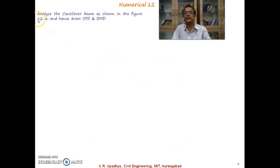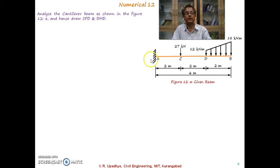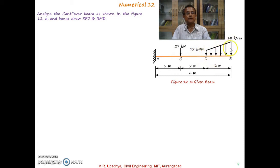In Numerical 12, the problem statement is: analyze the cantilever beam as shown in Figure 12A and draw the SFD and BMD. The beam goes from A to B, where A is the fixed support and B is the free end. At C, which is 2 meters from A, it is subjected to a 27 kN point load. From D up to B it is subjected to a uniformly varying load. We have not previously analyzed a beam subjected to uniformly varying load, and that is what we will discuss in this lecture.